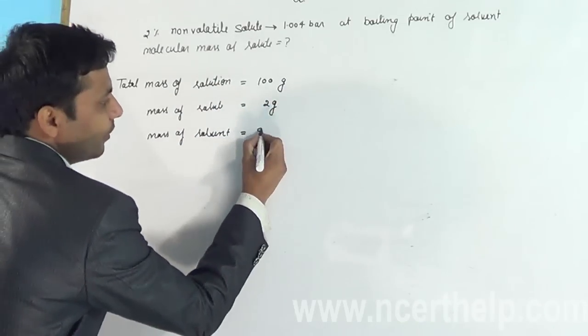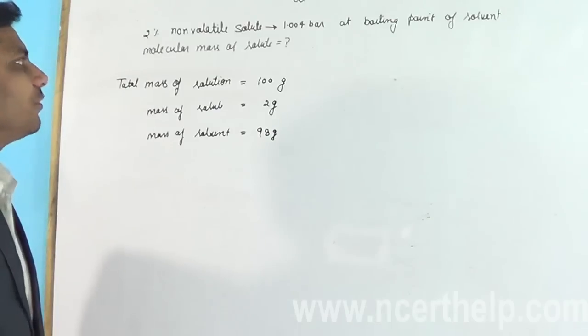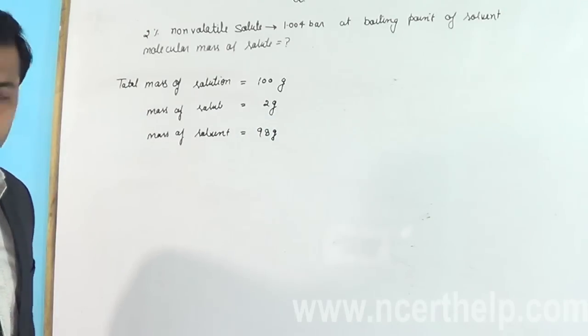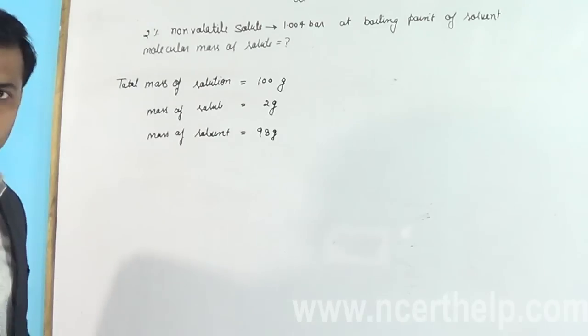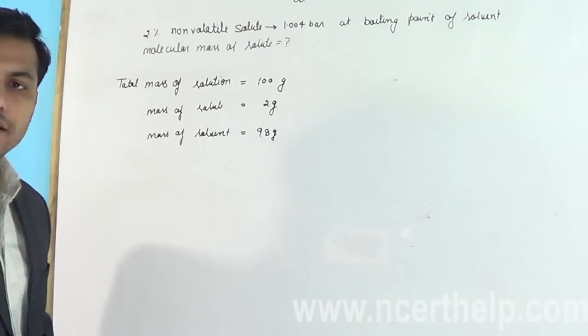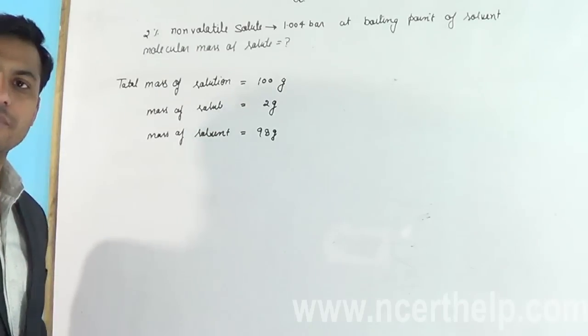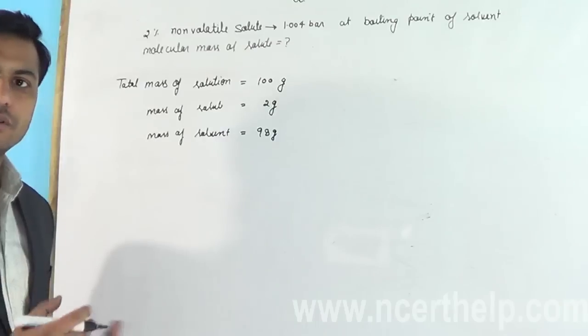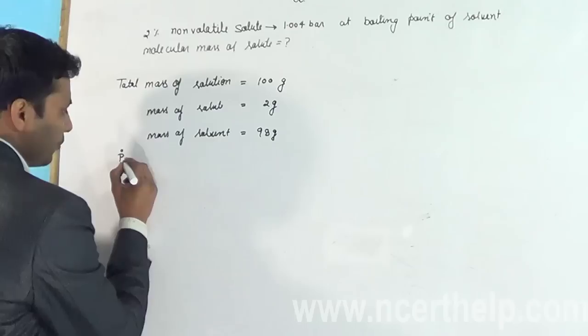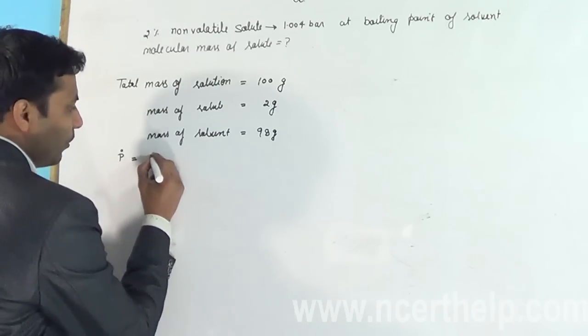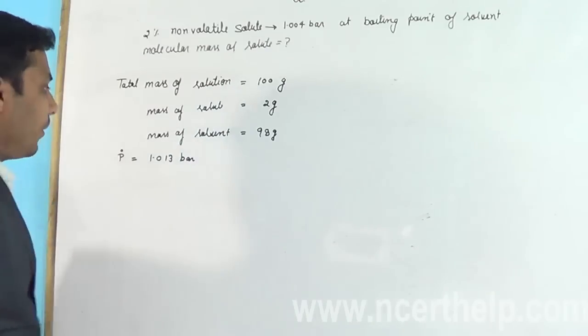Solution has solute and solvent. We know the mass of solute here, so mass of solvent will be total minus mass of solute: 100 minus 2 is equal to 98. Here our pressure is 1.004 bar, and the pressure of water at 100 degrees centigrade, or we can say at boiling point, is always equal to 1 atm, and 1 atm is equal to 1.013 bar.